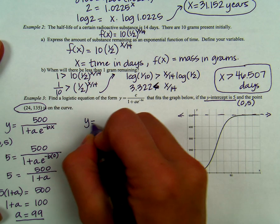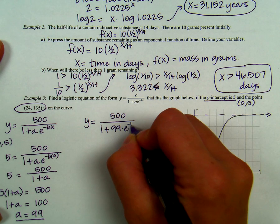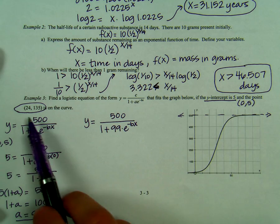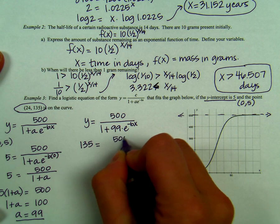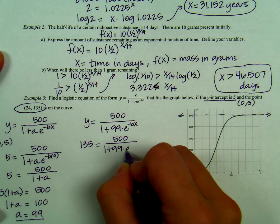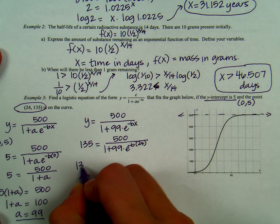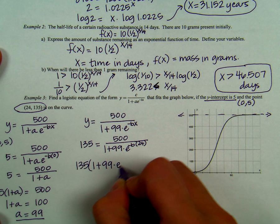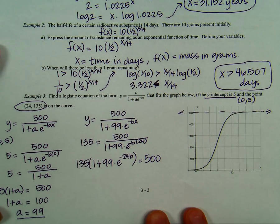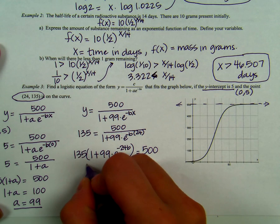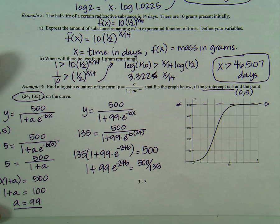We're not done yet because we need to plug that in back into our equation. So we're looking at y equals 500 over 1 plus 99 times e to the negative bx. Now we're going to use our other point, 24, 135 to solve for b. So we have 135 equals 500 over 1 plus 99 times e to the negative b times 24. So now we need to simplify this. We're going to have 135 times 1 plus 99 times e to the negative 24 b equals 500. Divide both sides by 135 and we're looking at 1 plus 99 e to the negative 24 b equals 500 over 135.